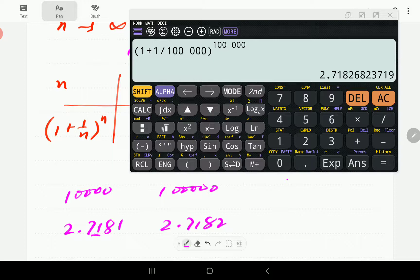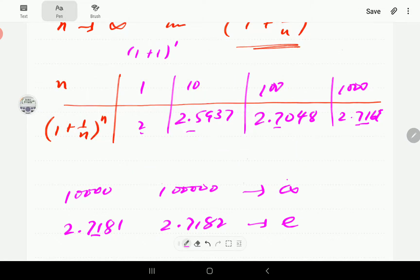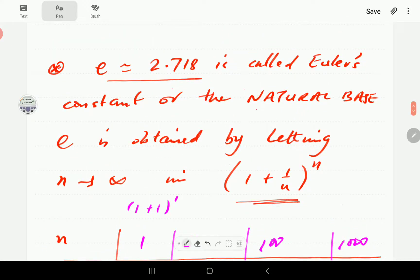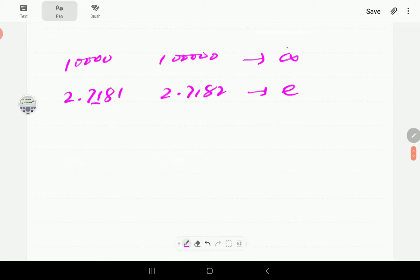So when this goes to infinity, this is going to go to the value e. That's the number e, which is called Euler's constant. And in the context of logarithms, it's called the natural base.